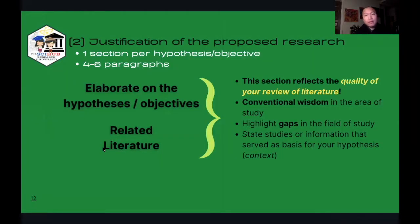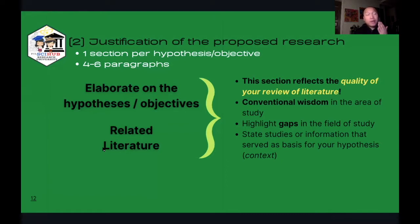The second part of the body of a proposal is the justification of your hypothesis and research objective. We dedicate one justification section for every hypothesis or objective that you have formulated within the proposal — one section per hypothesis and per objective. The typical length for this section ranges from four to six paragraphs.